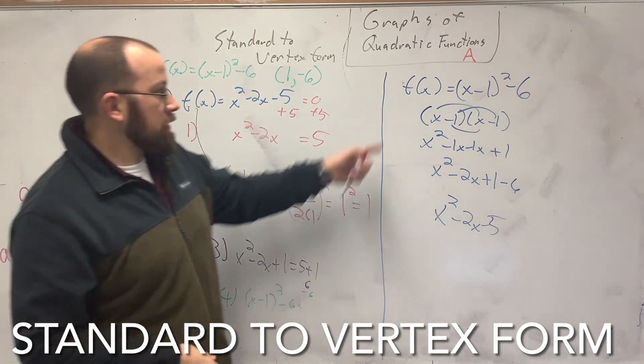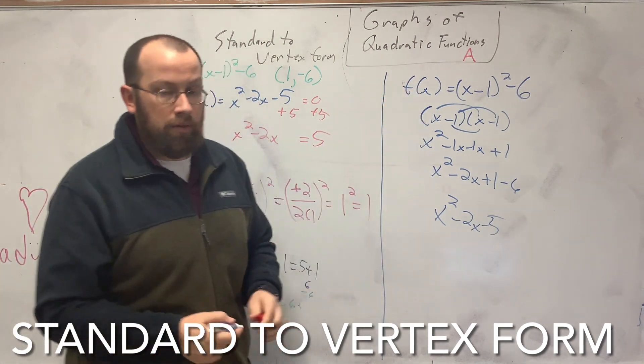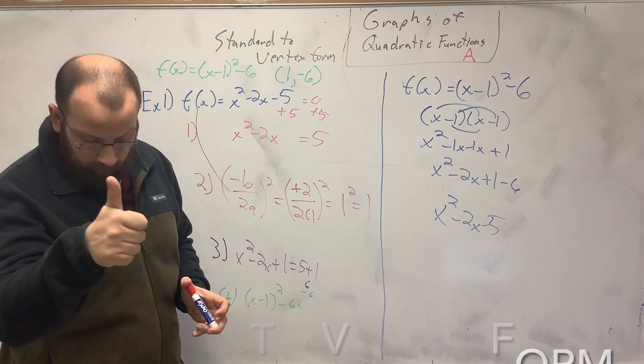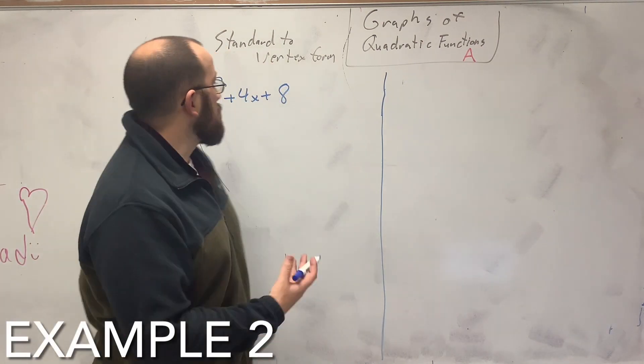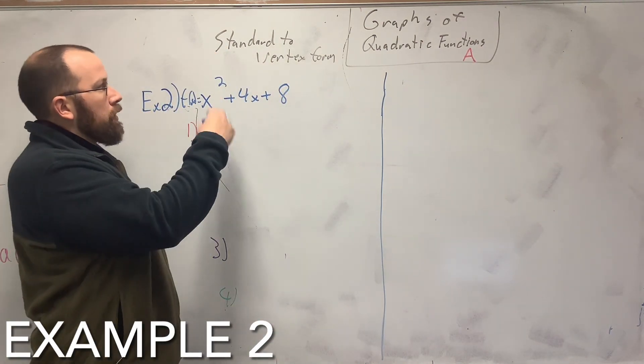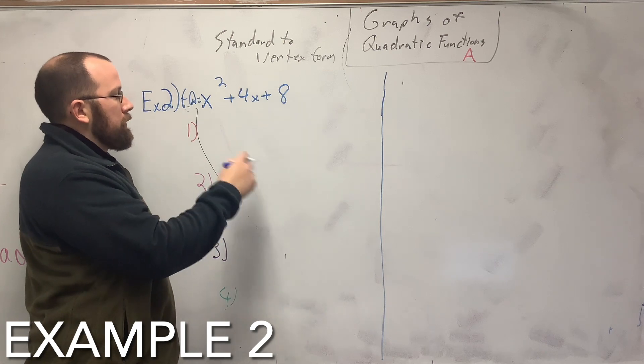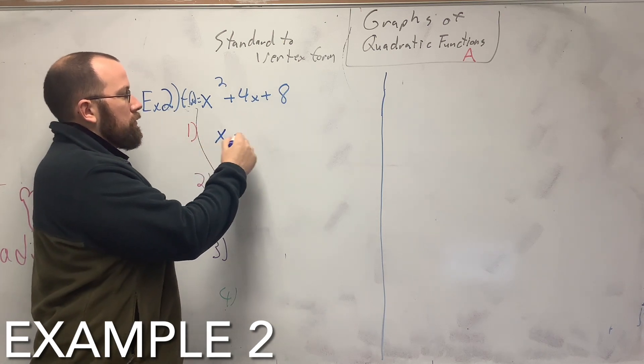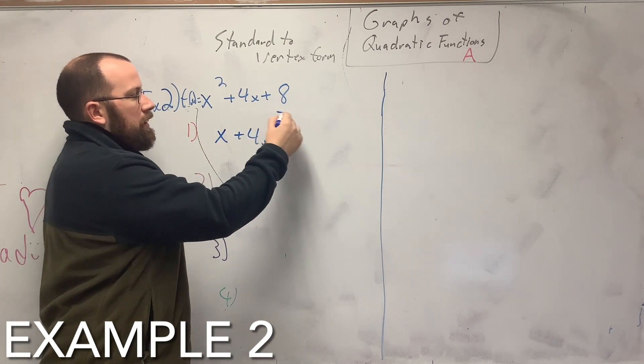So standard to vertex, vertex back to standard form. Now we're going to do another example of going from standard to vertex form. So the first thing we do is move the a to the other side.